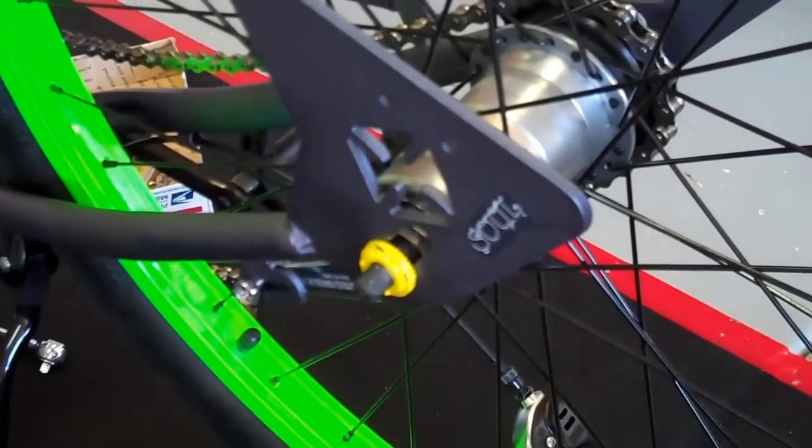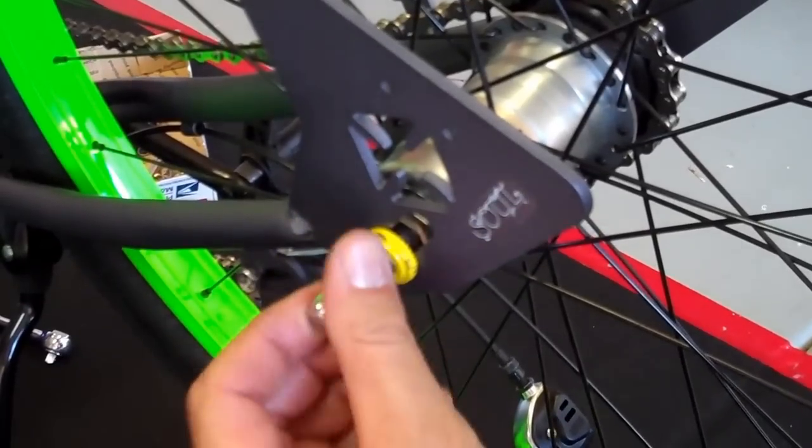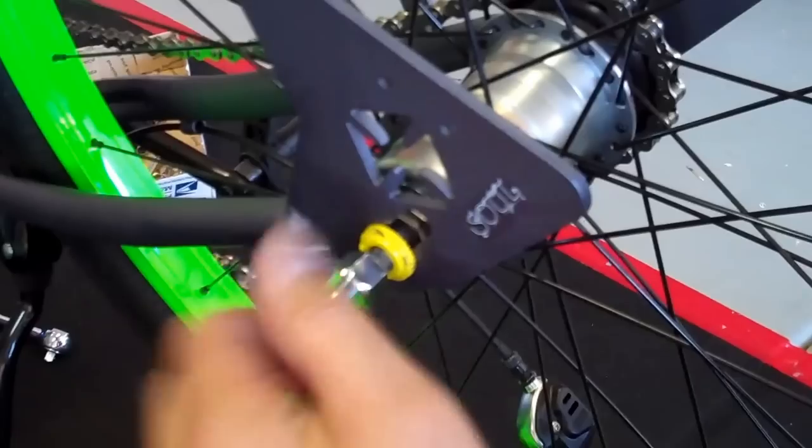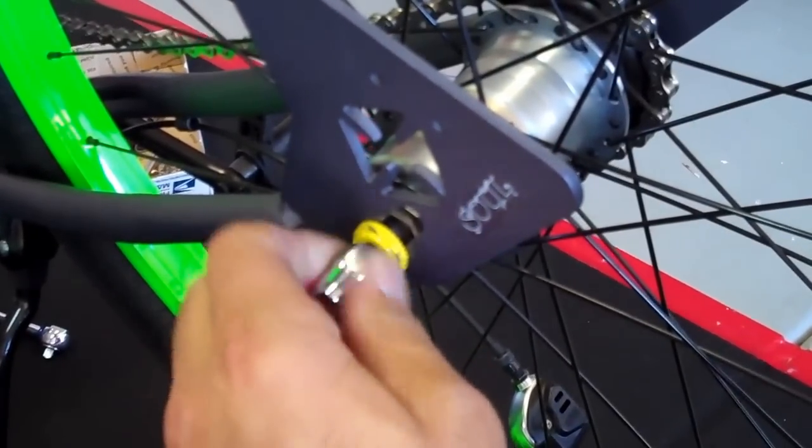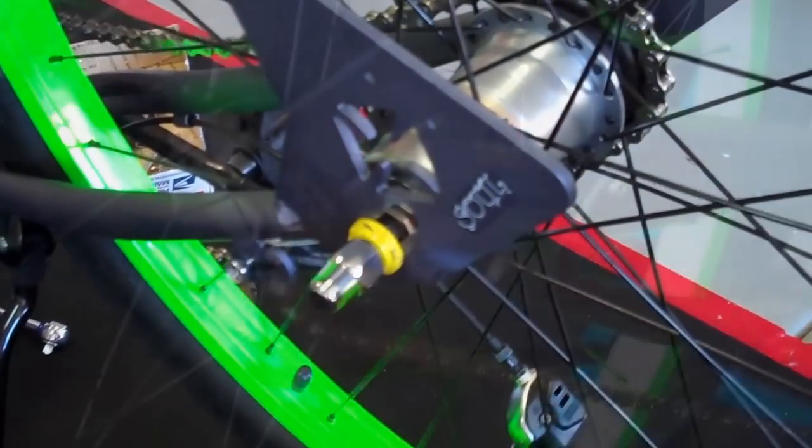From there, put the 8-core nut on here. Just hand tighten this on, and then we're going to move over to the other side.